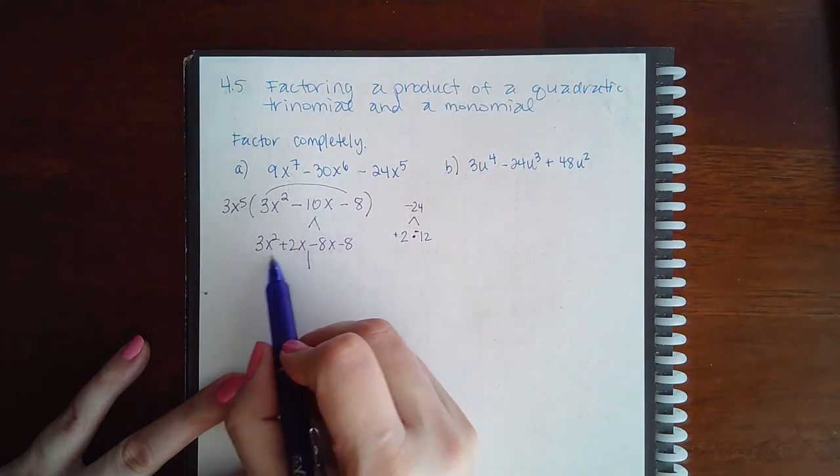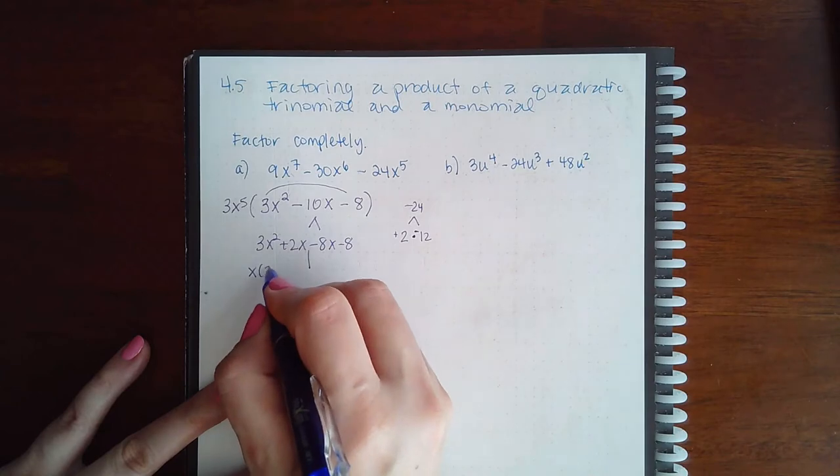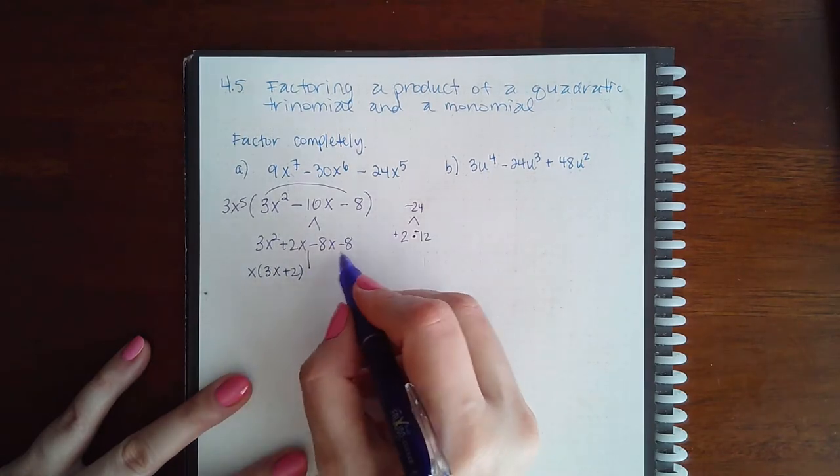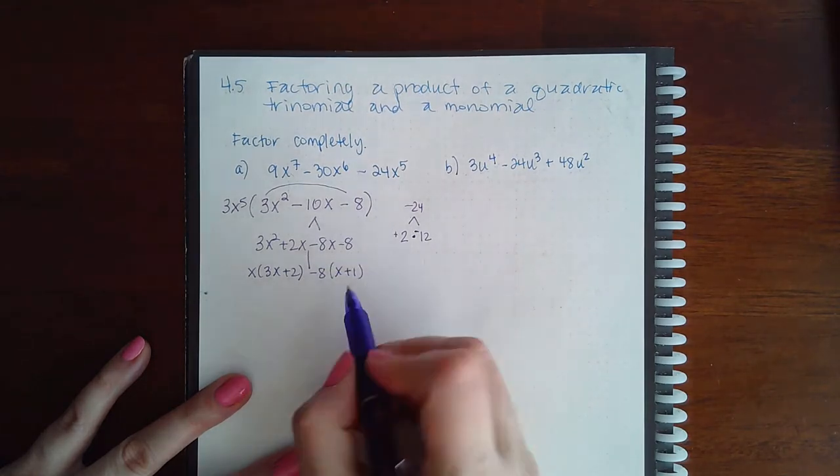Because I can factor out an x and I get 3x plus 2, and then here if I factor out a minus and an 8 I get x plus 1, but these don't match.